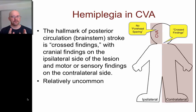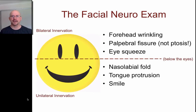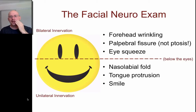Bell's palsy presents in a way that could fool you into thinking the patient is having a stroke, but they're actually not. Imagine you go see a patient and, being thorough, you do your facial neuro exam. You see that on one side — let's say the left — they've got a lack of forehead wrinkling, a wide and palpable fissure, a weak eye squeeze, a flattened nasolabial fold, deviated tongue protrusion, and an unequal smile.